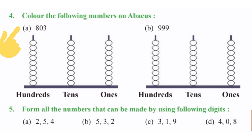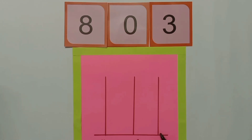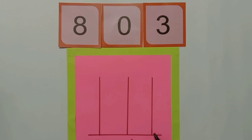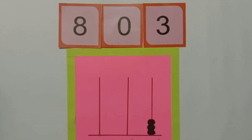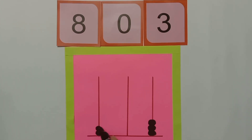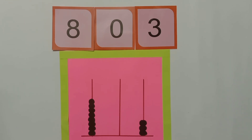Our next question is: color the following numbers on the abacus. The first part of this question is eight hundred three. First, we will draw an abacus with lines drawn up to the hundreds place. On the ones place we have the number three, so we will draw three beads on the ones place. On the tens place we have zero, so no bead will be drawn there. On the hundreds place we have the number eight, so we will draw eight beads — one, two, three, four, five, six, seven, and eight. We have drawn eight beads on the hundreds line.